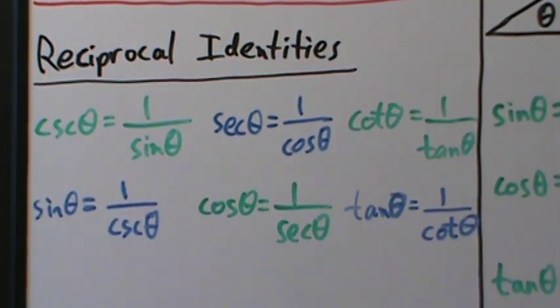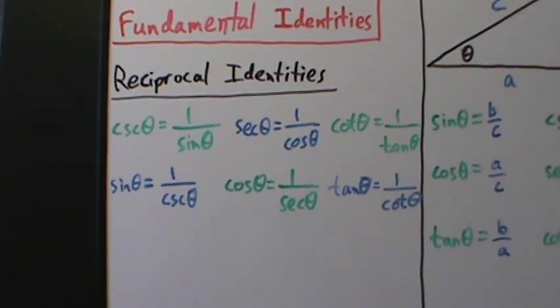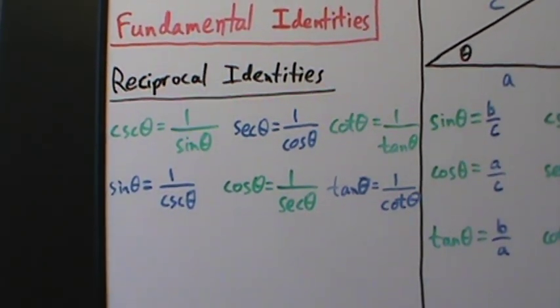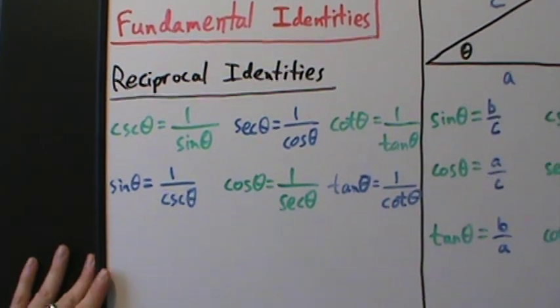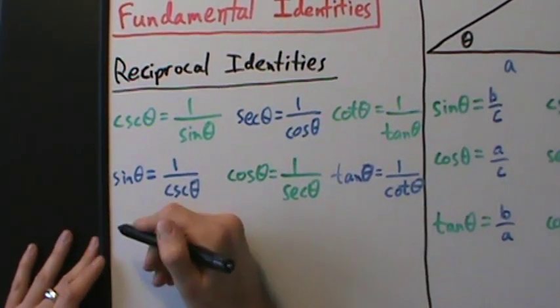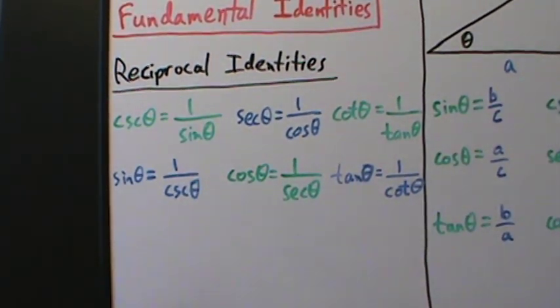There are two other types of identities: quotient identities and Pythagorean identities. We'll do the quotient identities in this video and the Pythagorean identities in the next video, because they're very important and should be kept separate.